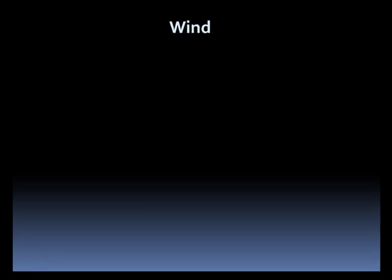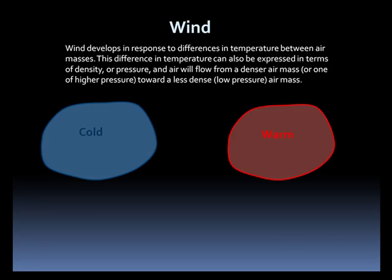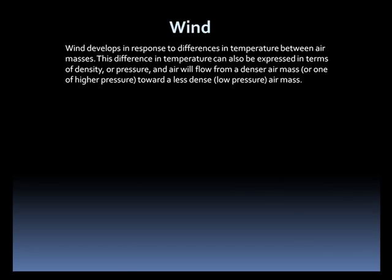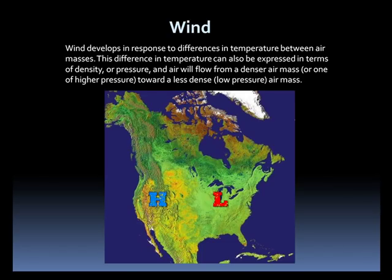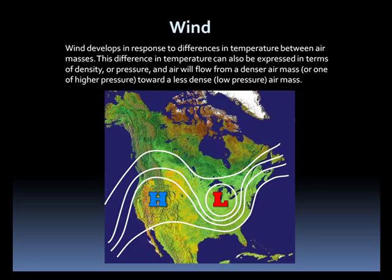Wind develops in response to differences in temperature between air masses. This difference in temperature can also be expressed in terms of density or pressure, and air will flow from a denser air mass, or one of higher pressure, toward a less dense, low pressure air mass. On a weather map, air will flow from high pressure to low pressure. The strength of the pressure systems is represented by lines of constant pressure called isobars. The tighter the isobars, the stronger the winds.